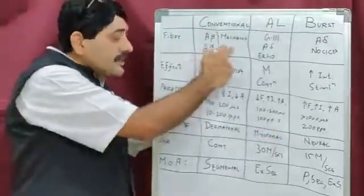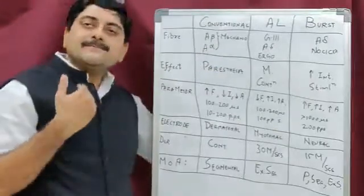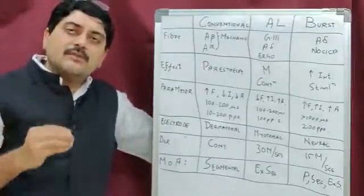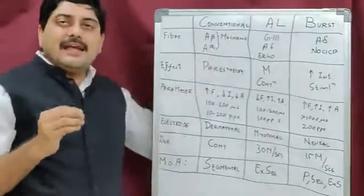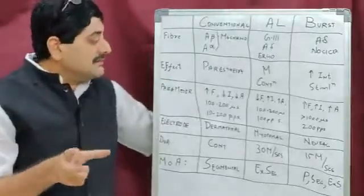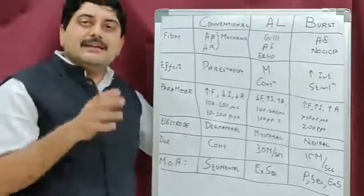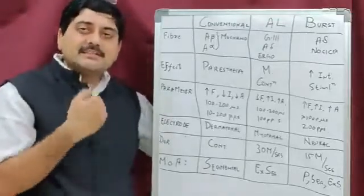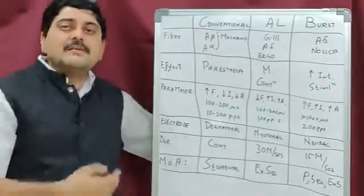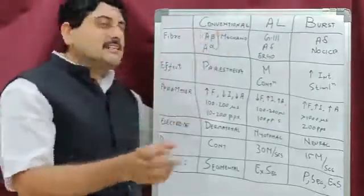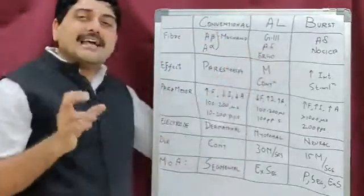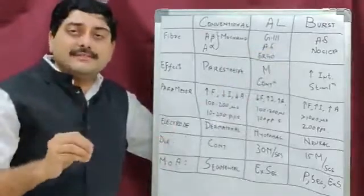Conventional TENS works by stimulating the mechanoreceptors — that is the A-alpha and A-beta receptors — and it works on a peripheral mechanism. It works segmentally. The mechanism of action of TENS, whether local, peripheral segmental, or extra-segmental, will be discussed in another lecture. The key point is that conventional TENS works by stimulating the A-beta or A-alpha receptors.